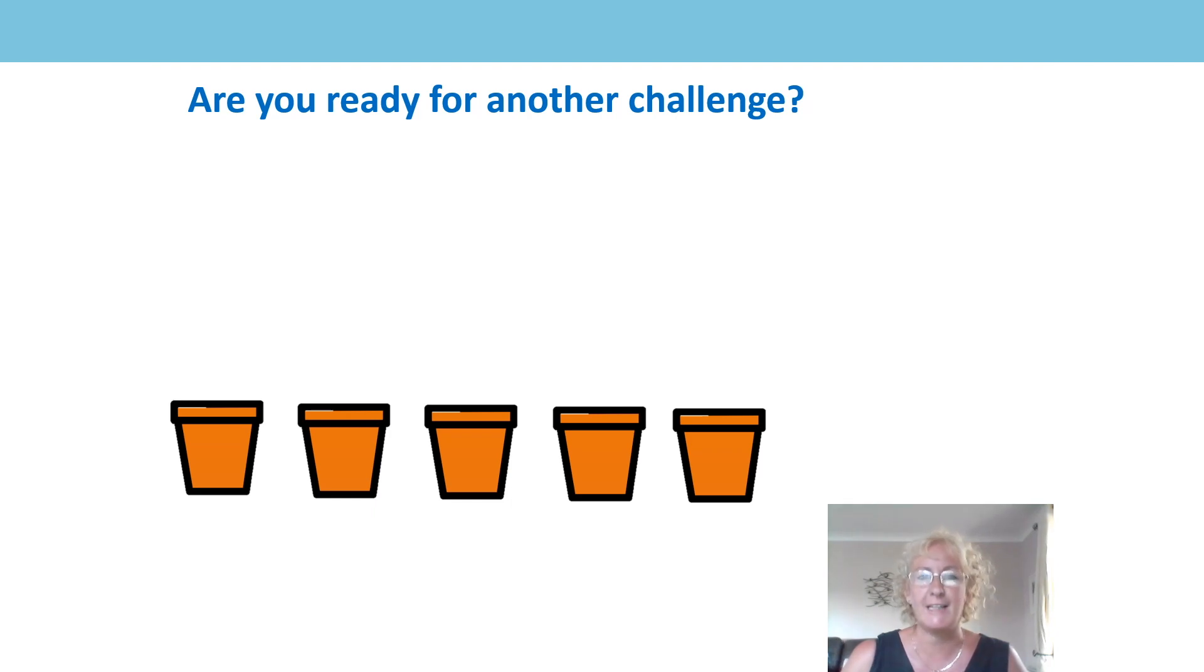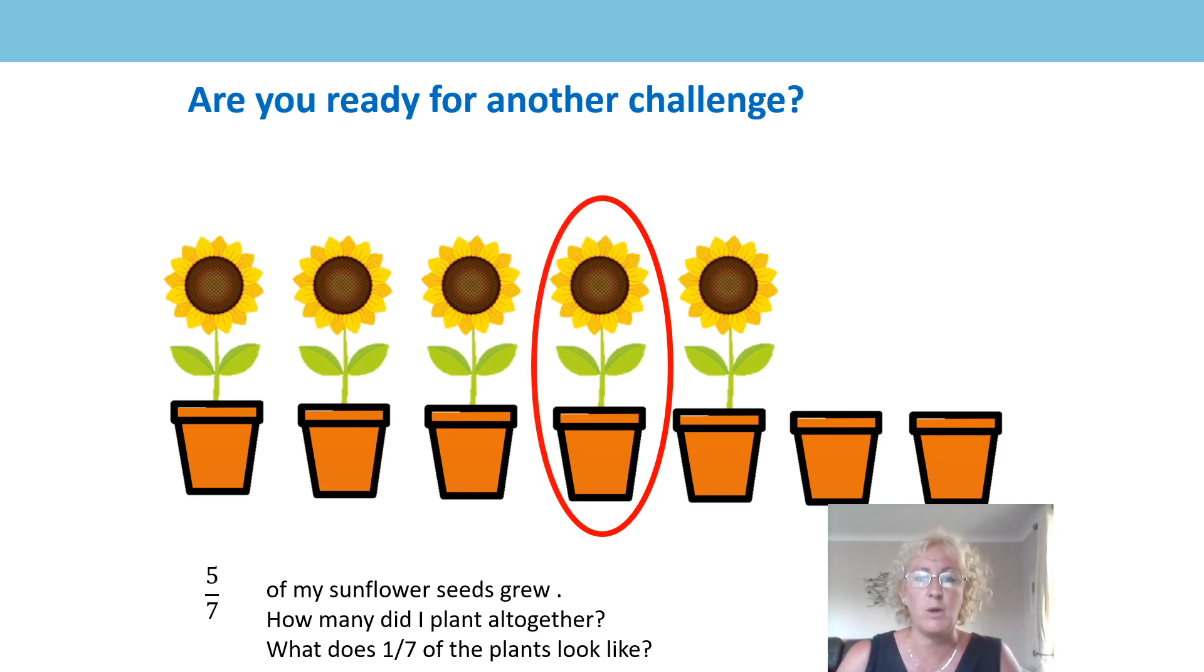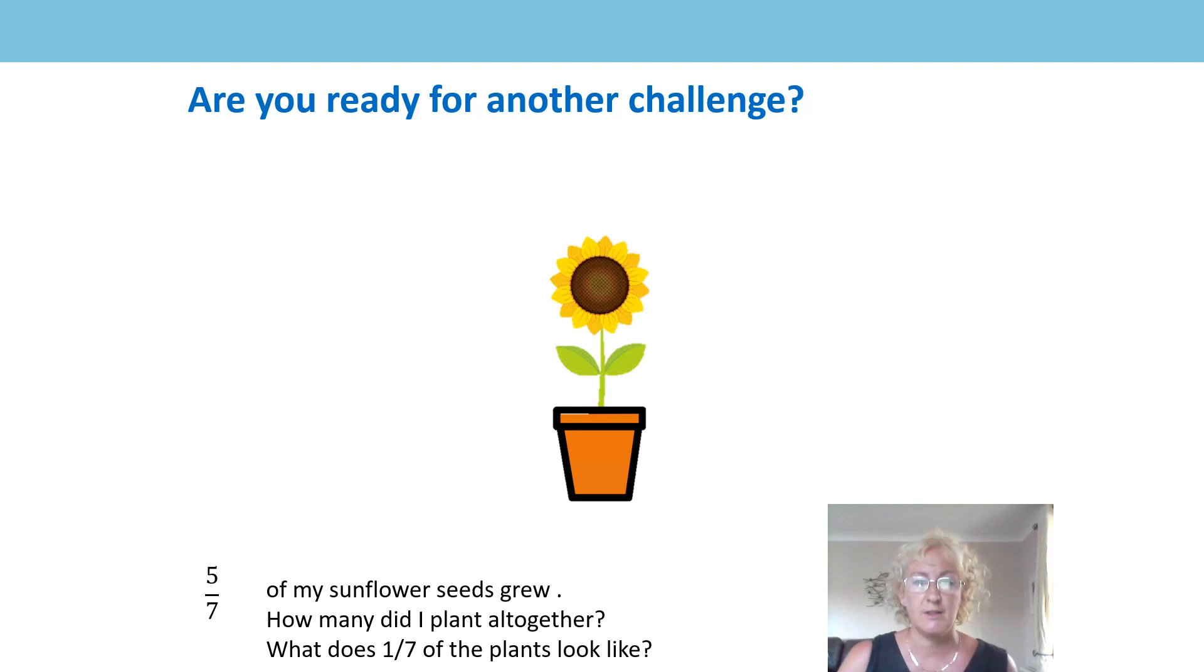Let's try something even more challenging now. With all this lovely sunny weather that we've been having, I've been planting some sunflower seeds in some plant pots. Not all of my seeds have grown into sunflowers. So I planted a number of seeds and this is five sevenths of what my seeds produce. So I want you to have a think about what one seventh is. Did you have a think about how many seeds I planted altogether? That's right, I planted seven seeds. So there was one seed in each pot. If there are seven parts altogether, what is one part? One part would be one sunflower. Well done for getting that one right.